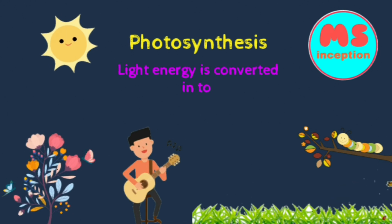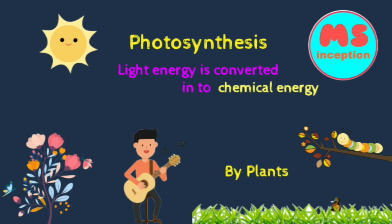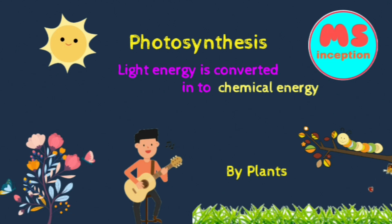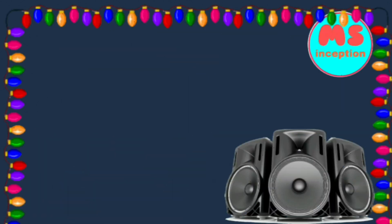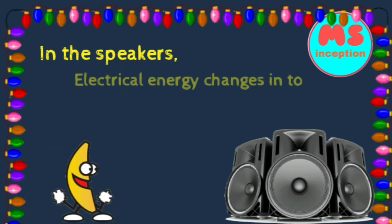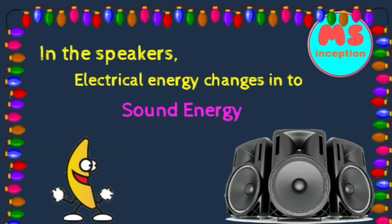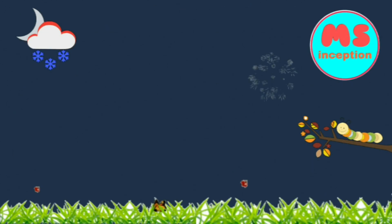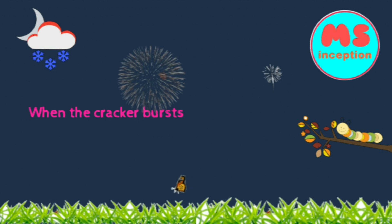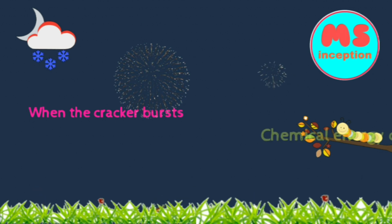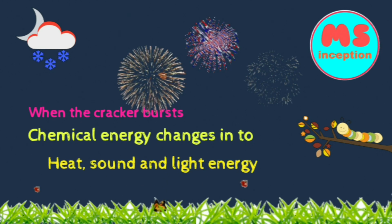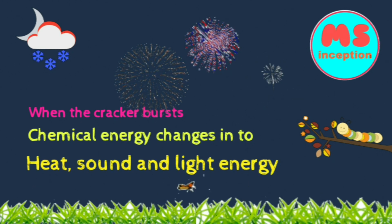Plants prepare food by photosynthesis. During photosynthesis, light energy of the Sun is being converted into chemical energy. In speakers, electrical energy converts into sound energy. In crackers, chemical energy is converted into heat, sound, and light energy.